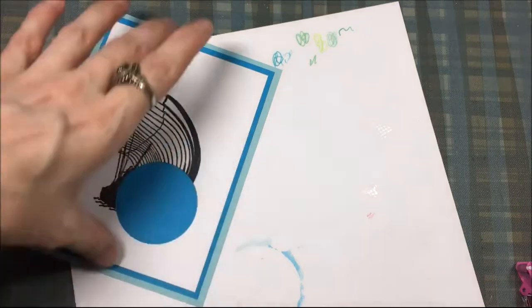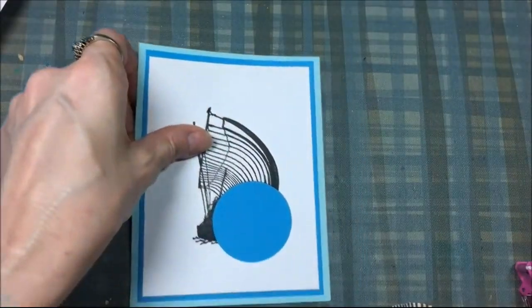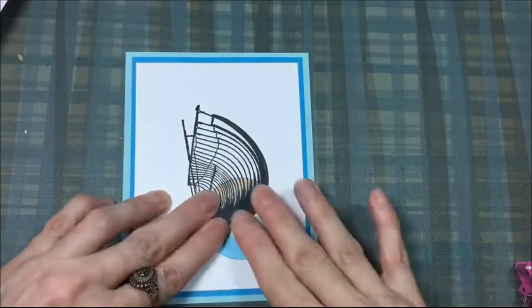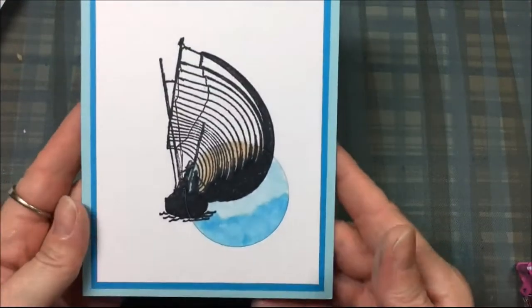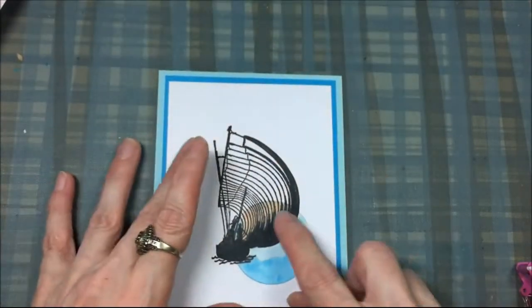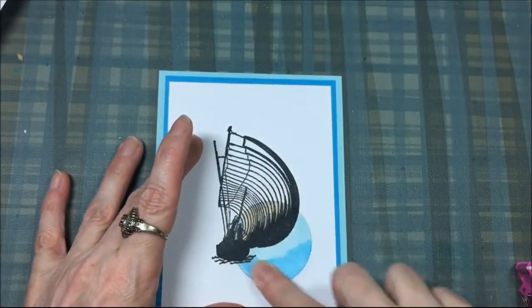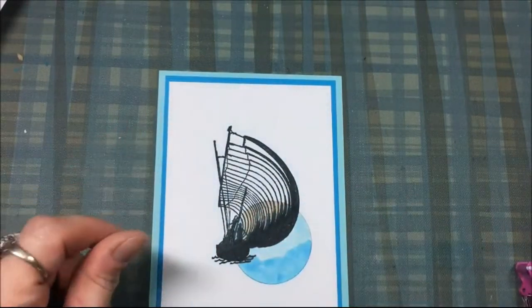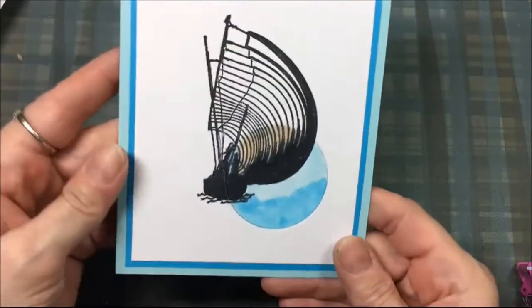But I'm going to glue that circle right back into that negative space. And there it is, all glued perfectly into its original space. And I'm just rubbing it down to make sure it's really stuck.